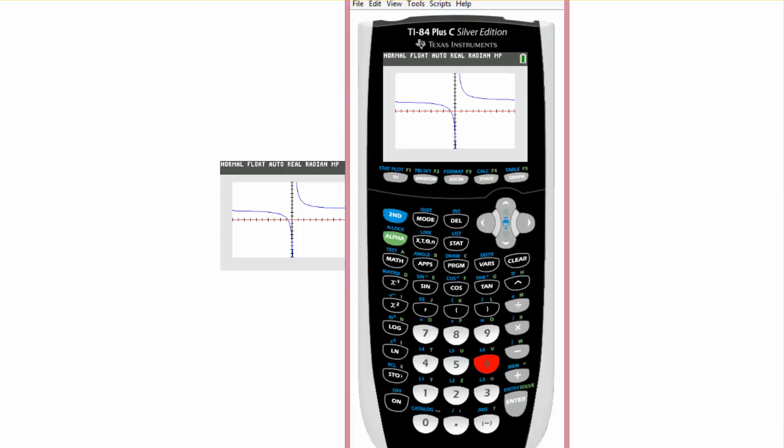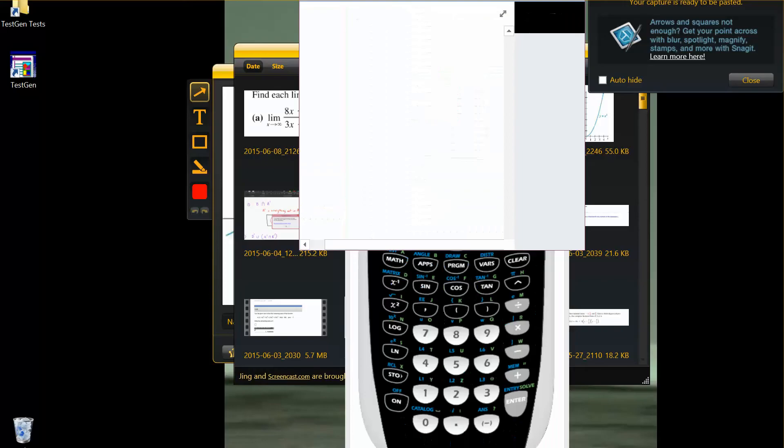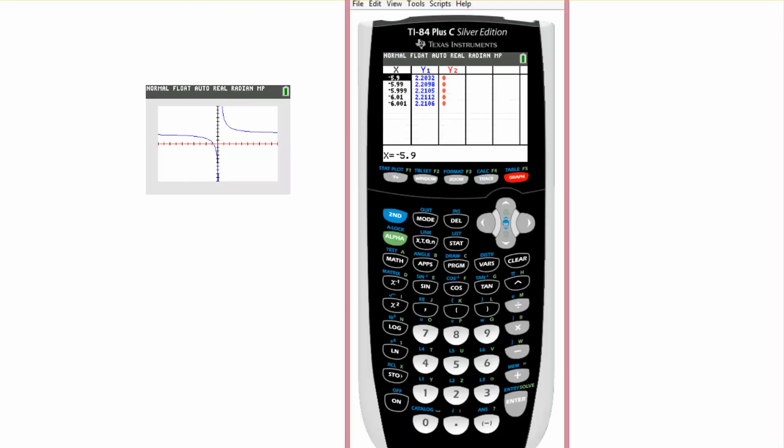Okay, so as we can see if I, let me get some room here. There we go. So here as x is going to infinity, so if we were going this way, what is this number approaching?